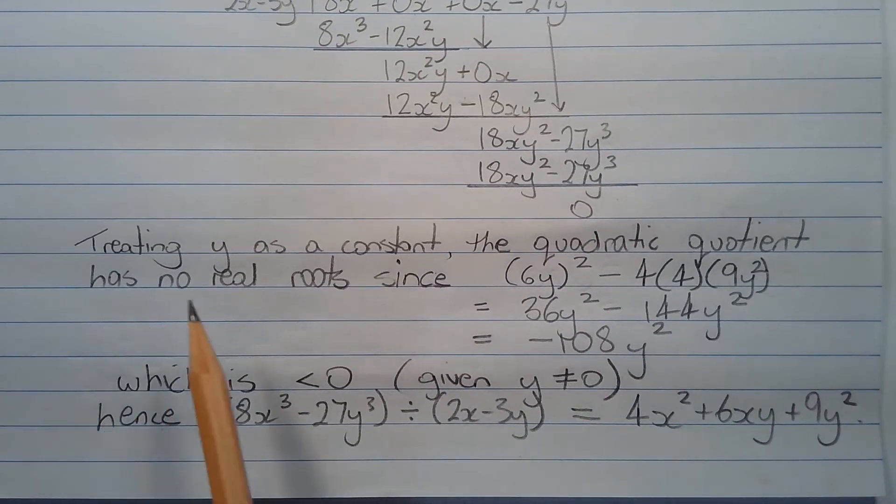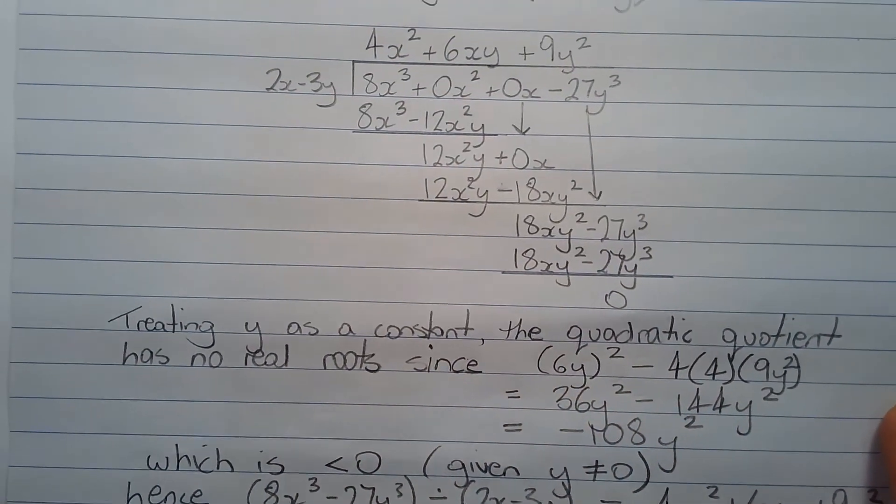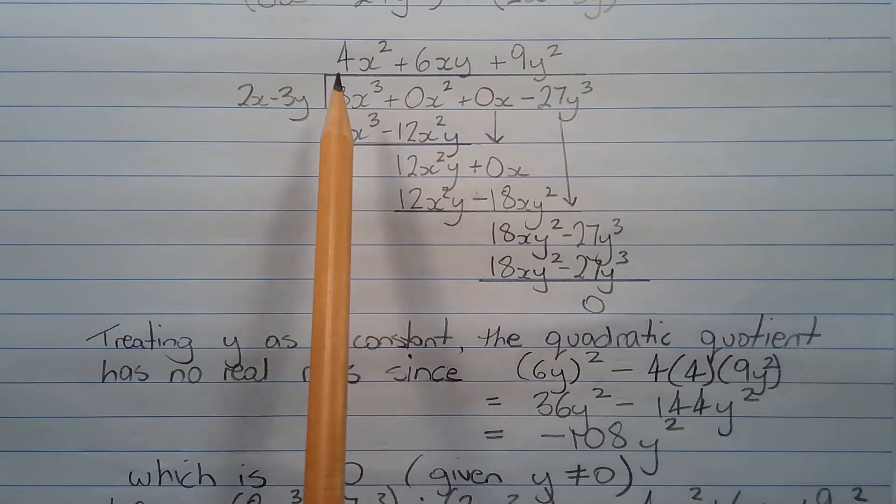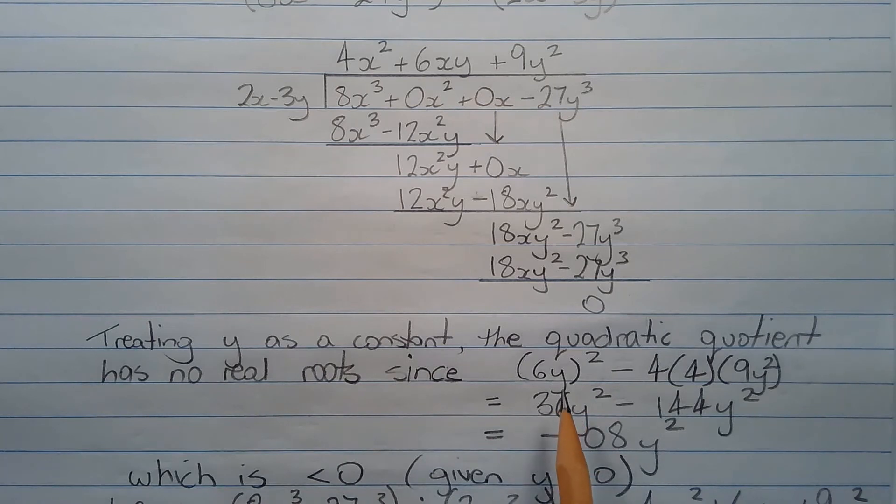Now, treating y as a constant, the quadratic quotient has no real roots since b squared minus 4ac. I'll bring the quotient back again. So this is our quadratic quotient, and b squared minus 4ac equals 36y squared minus 144y squared, which is negative 108y squared,